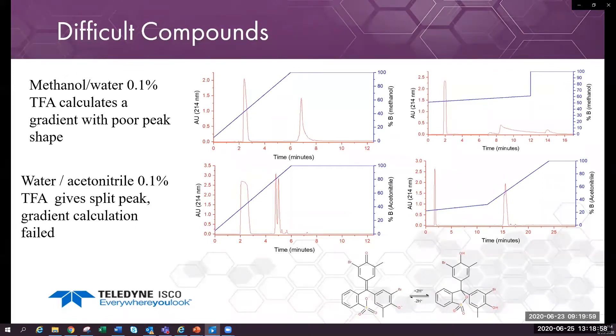Acetonitrile, the compound eluted late from the focused gradient. The peak shape in both scouting runs give a strong clue that the chromatography will not be good for a focused gradient.